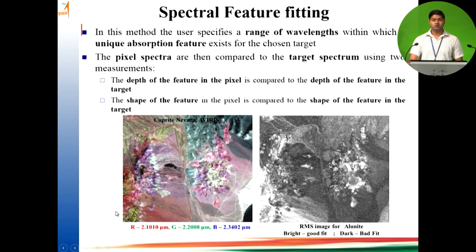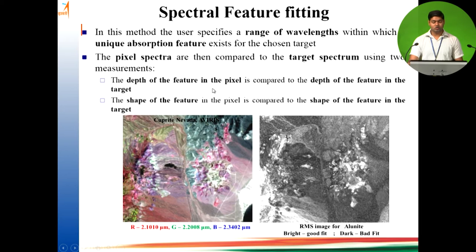Spectral feature fitting focuses on the absorption features of the image spectra and reference spectra. If the shape or depth of the absorption feature matches the target or reference spectra, that pixel is classified into that class. For example, using alunite spectra on a Cuprite, Nevada image, wherever alunite is present it appears bright, meaning a good fit.